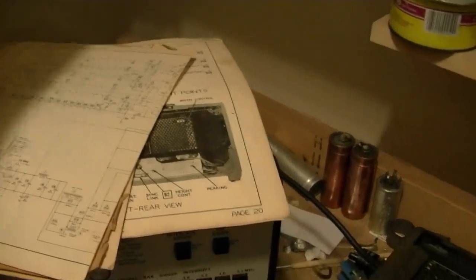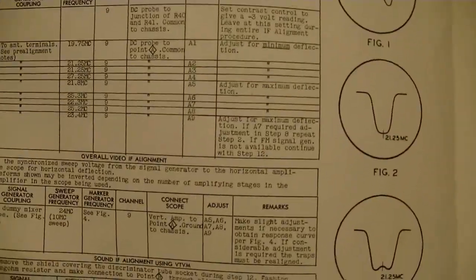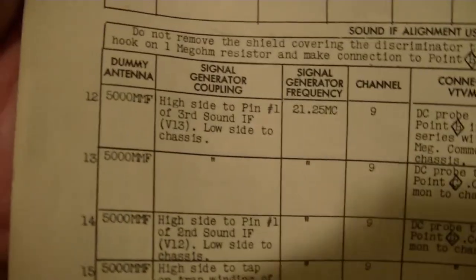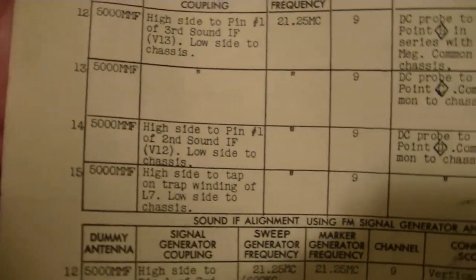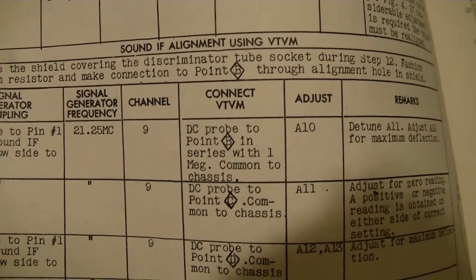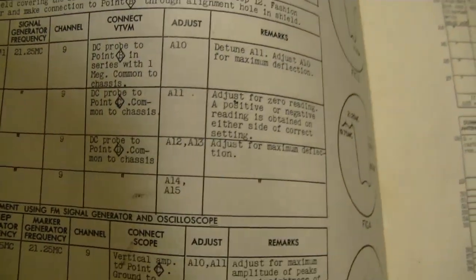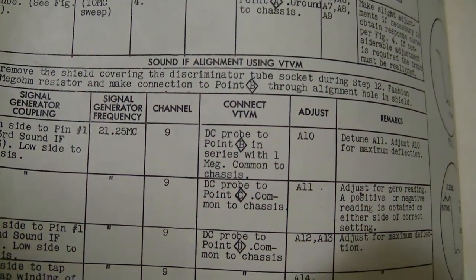The reason being is that there's a lot you've got to do. For almost every step you have to change where you're feeding the signal in and where you attach your VTVM, especially for the audio. You can see here for the first two steps you put your signal in there, and then you've got to change it and change it again. You've got to move your VTVM from point B to point C to point D.